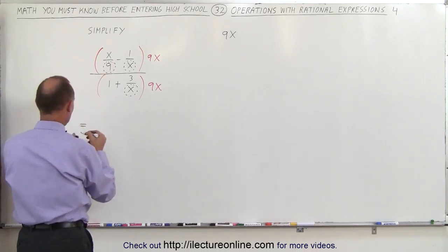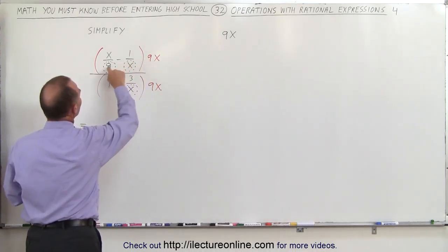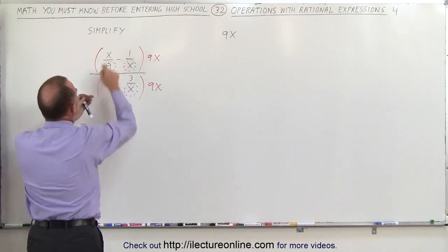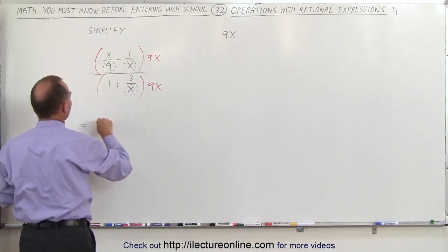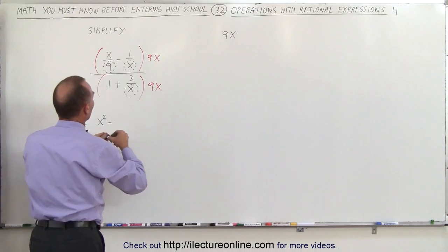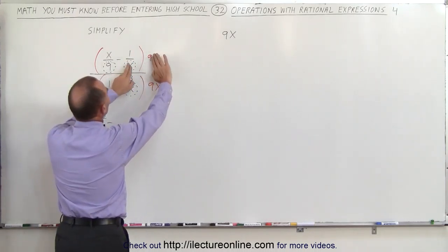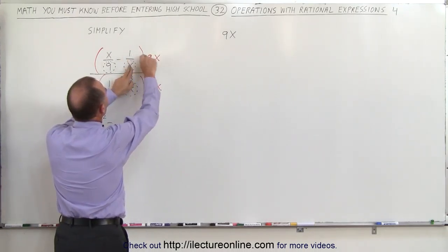So this is equal to 9x times this. Notice the 9's cancel out and it's x times x, which gives x squared. Minus 1 over x times 9x, the x's cancel out and you're left with minus 1 times 9.